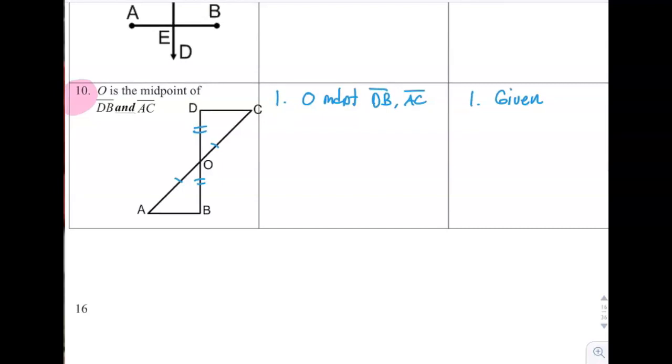And the last one, O is the midpoint of both DB, so those two are the same. And it's also the midpoint of AC, so those two are the same. So you can say DO is congruent to BO because a midpoint implies two congruent segments. And also AO is congruent to CO for the same reason. Midpoint implies two congruent segments.